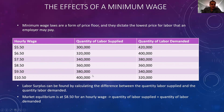At this point, at the hourly wage of $8.50, we have our market equilibrium, and that is because quantity of labor supplied equals quantity of labor demanded at 360,000.